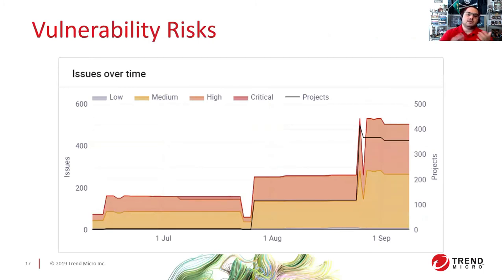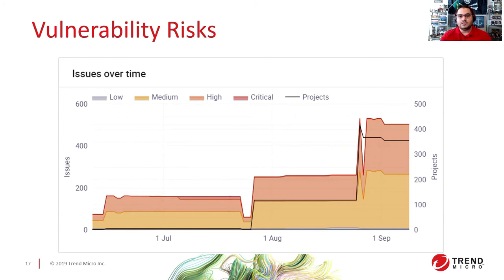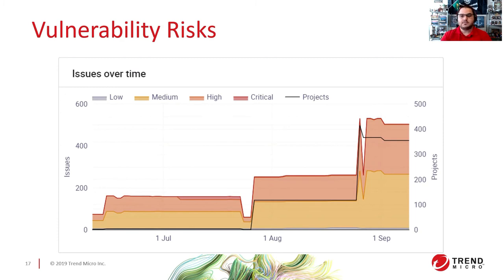We can also see vulnerability risk increasing over time regarding libraries and dependencies. As time goes by, new vulnerabilities are found, libraries get outdated, and more issues are raised — so the risk increases for these projects. The quicker we address those issues, the faster we can reduce the risk of these projects being compromised.